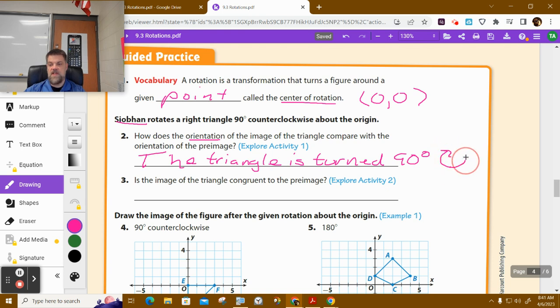And then we'll say counterclockwise is like this. I'm just going to draw an arrow because if I say left or right, it confuses people. Because some people start at the top and go left this way and some people start at the bottom. And then it says, is the image of the triangle congruent to the pre-image? Now, in this case, you would say yes. They are the same.